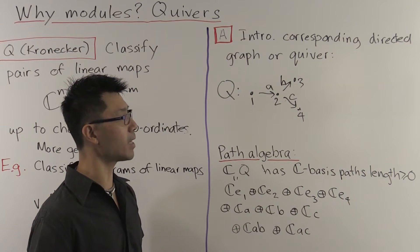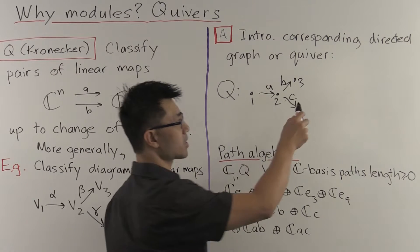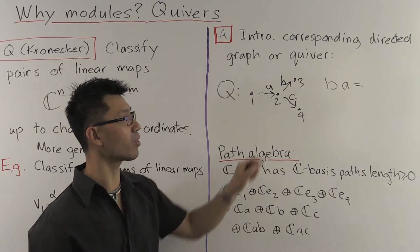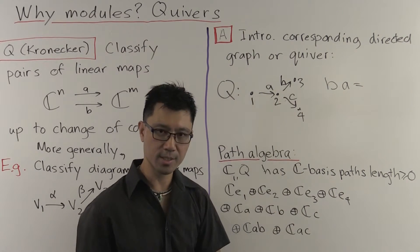However, if you can't make a path, for example, B times A, you don't get a path when you concatenate these. We set it equal to 0.